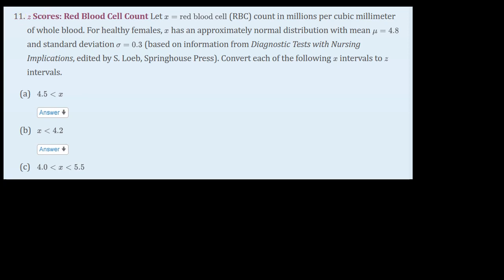I'm going to discuss example 11 from section 7.2 of our Understanding Basic Statistics textbook, 8th edition. X is the red blood cell count in millions per cubic millimeter of whole blood. For healthy females, X is normally distributed with a mean mu of 4.8 and standard deviation 0.3.